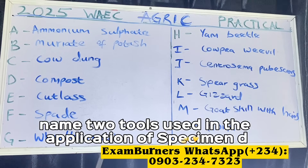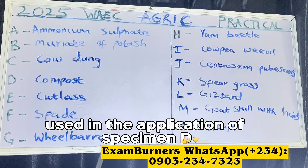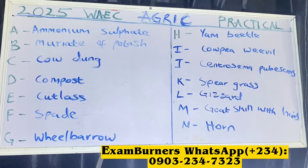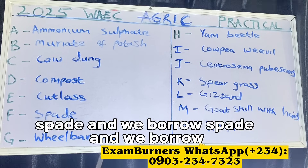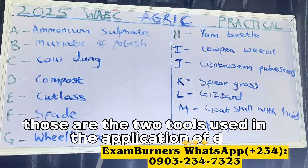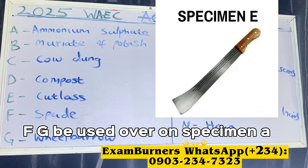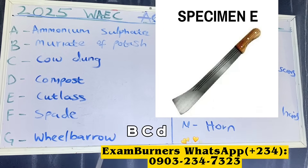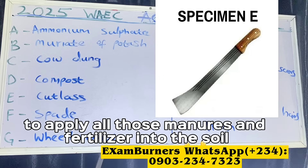Name two tools used in the application of specimen D. The answers are specimen F and G — spade and wheelbarrow. Those are the two tools used in the application of compost. So if you are asked how specimens E, F, G can be used on specimens A, B, C, D, we use the spade and wheelbarrow to apply those minerals and fertilizers into the soil.